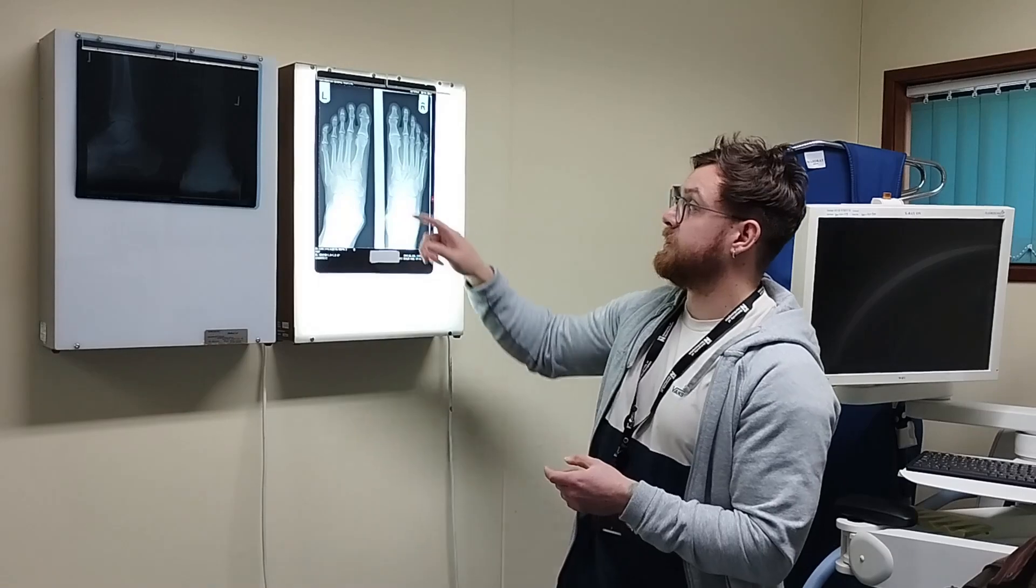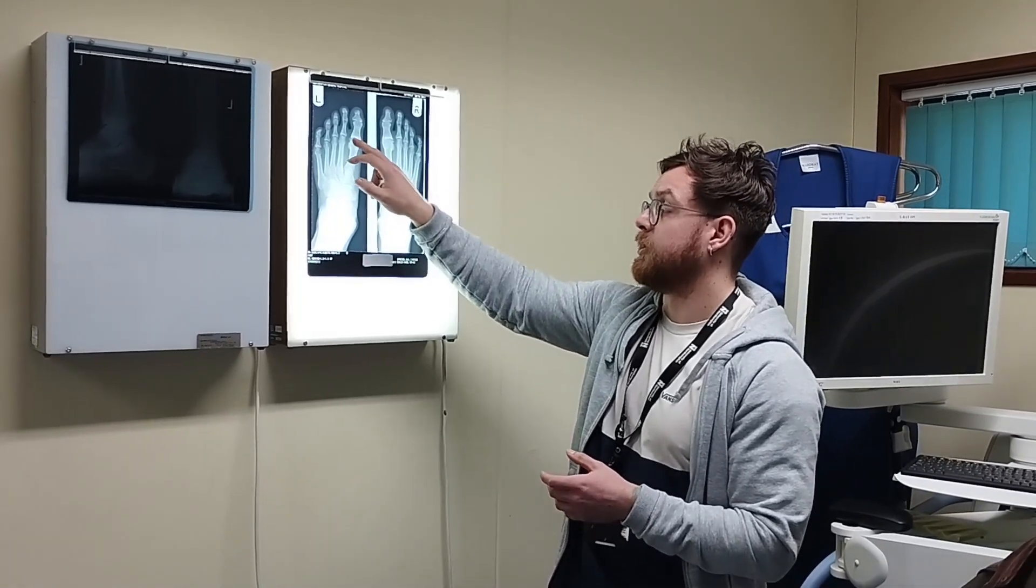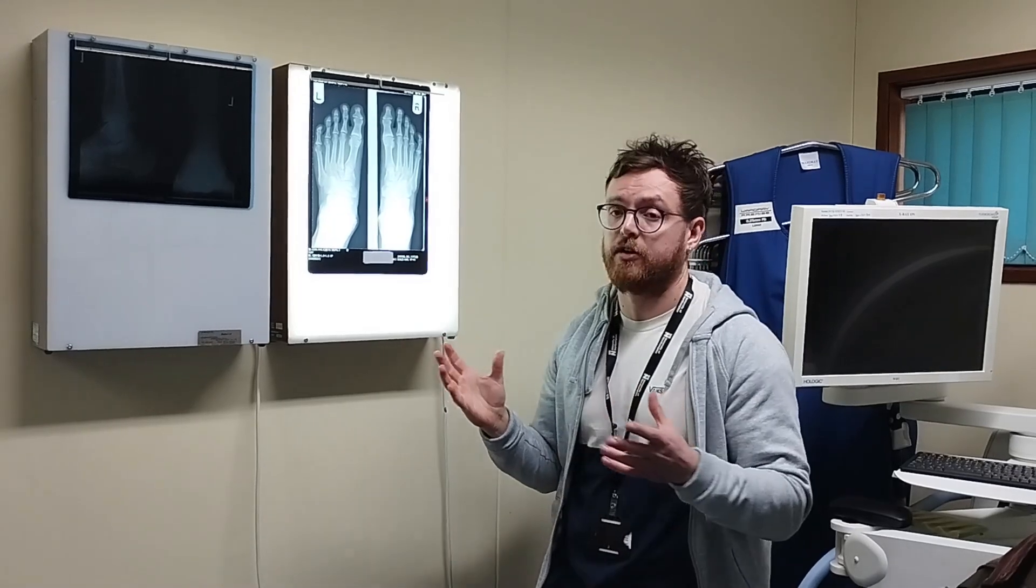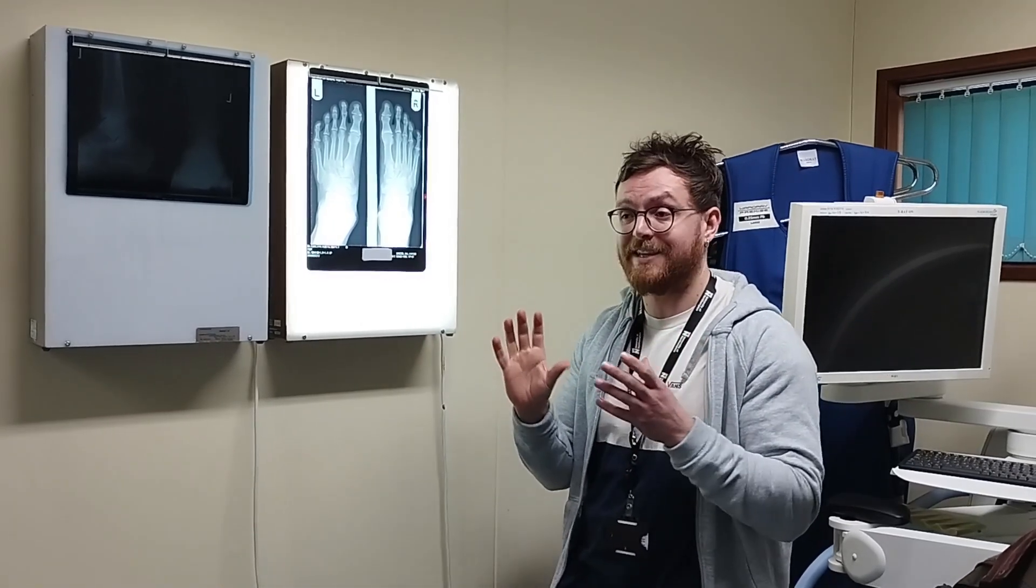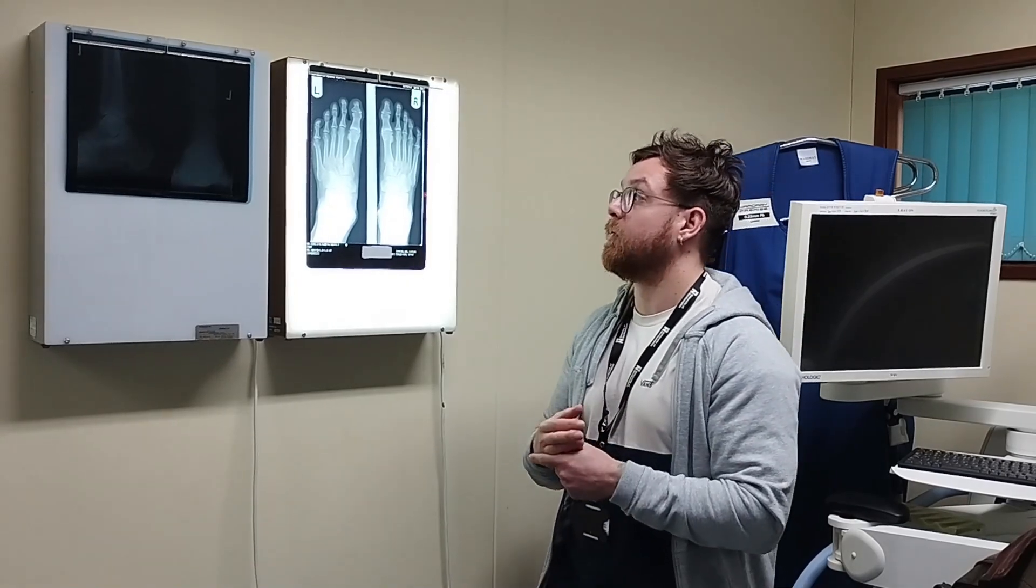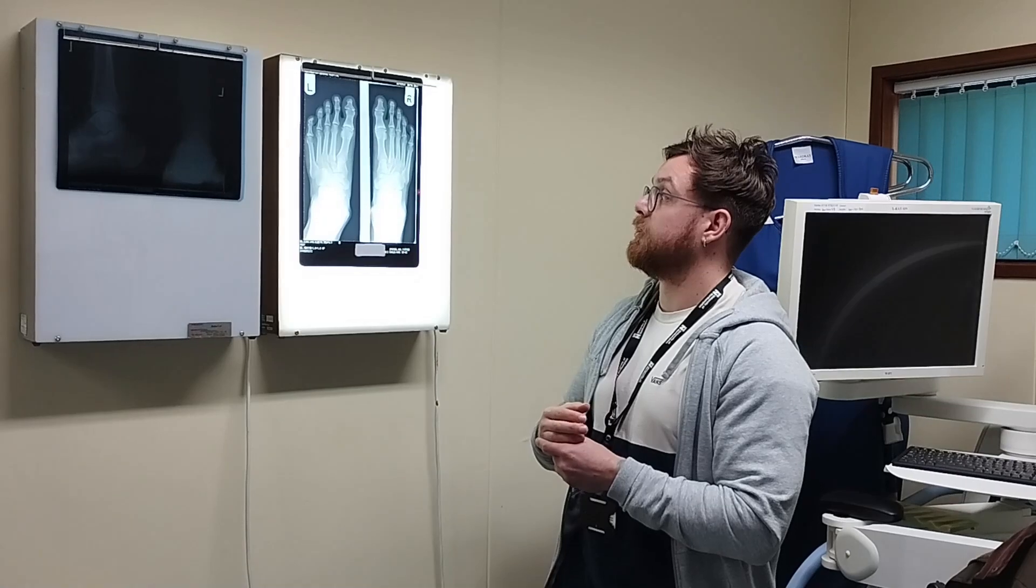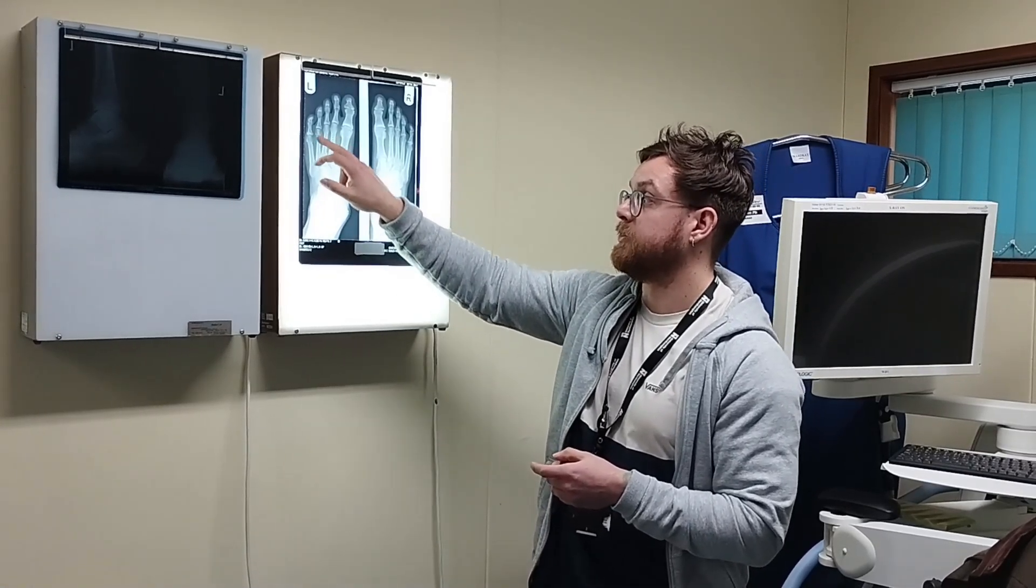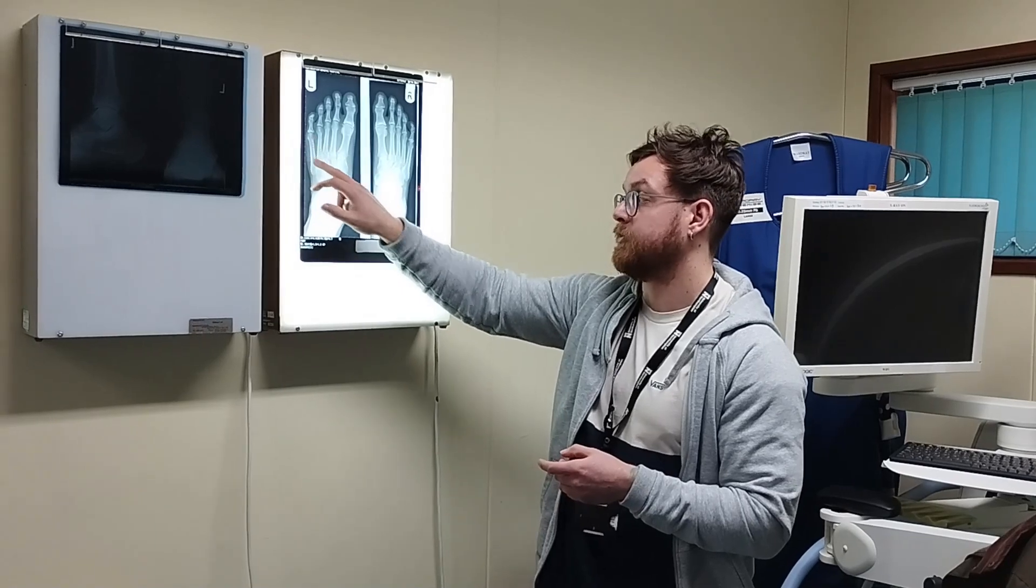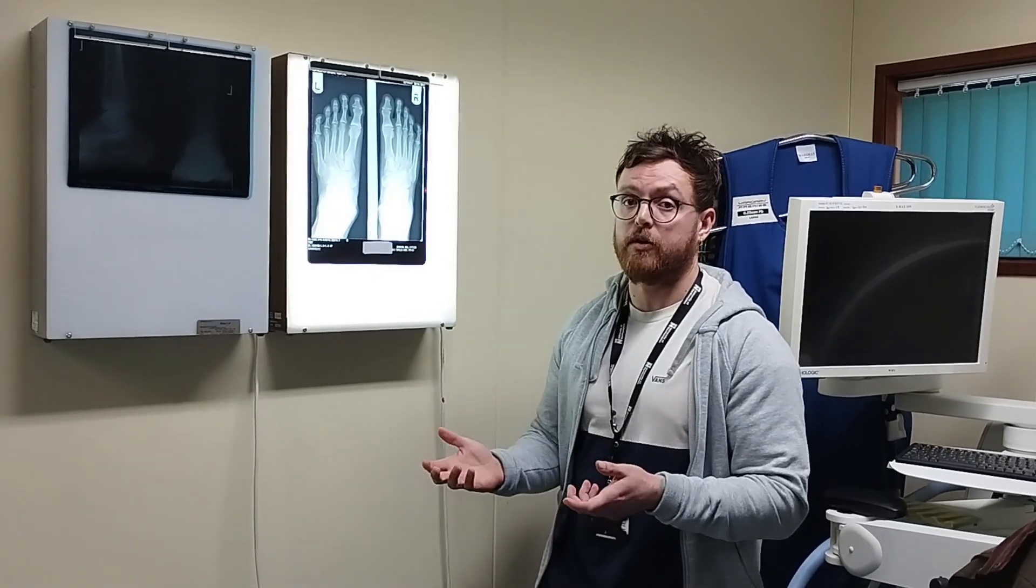For bone density, you're looking for things like subchondral sclerosis, so areas where you've either got increased radiolucency or increased areas of radio-opacity, so whiter or blacker bits basically. The other thing you can also look for is width of the diaphysis. So narrowing of the diaphysis, the shaft of the long bone, is also indicative of reduced bone density.